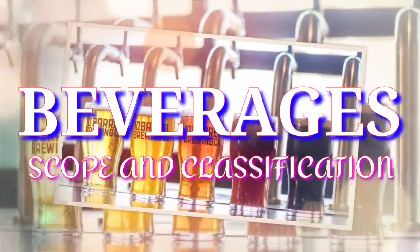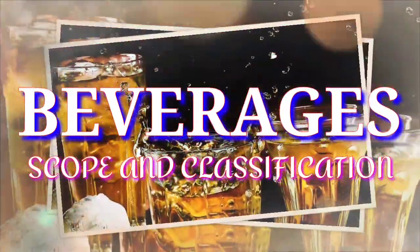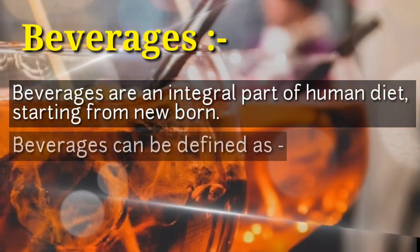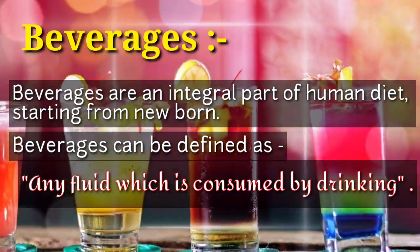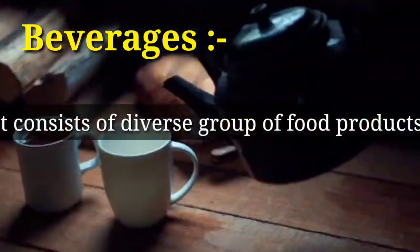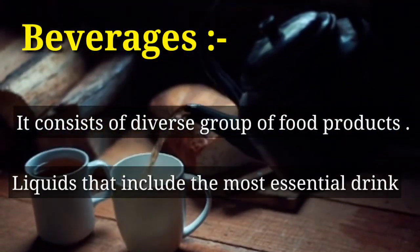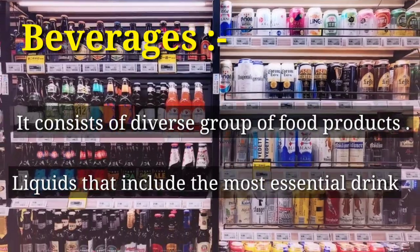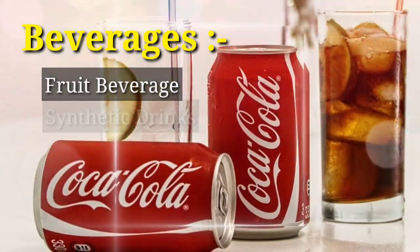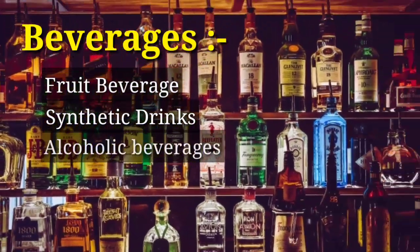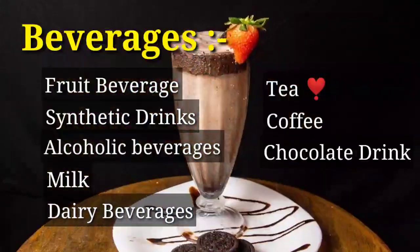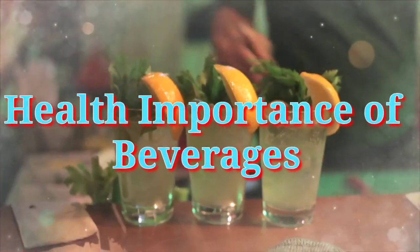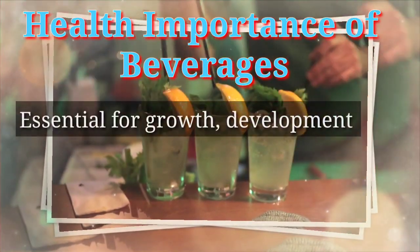Beverages: scope and classification. Beverages can be defined as any fluid which is consumed by drinking. It consists of a diverse group of food products, usually liquids, that include the most essential drink — water — to a wide range of commercially available fluids like fruit beverages, synthetic drinks, alcoholic beverages, milk, dairy beverages, tea, coffee, chocolate drinks, etc.